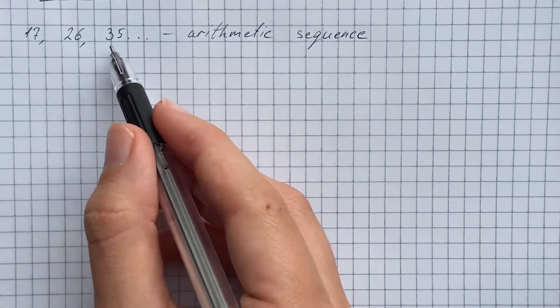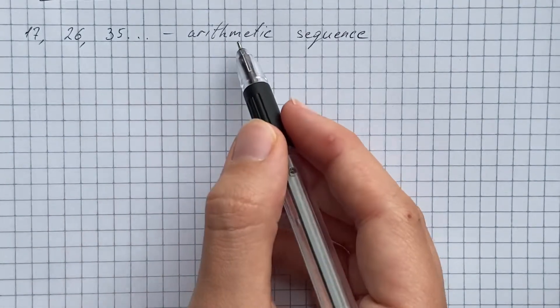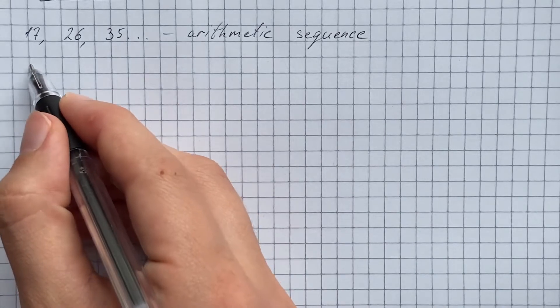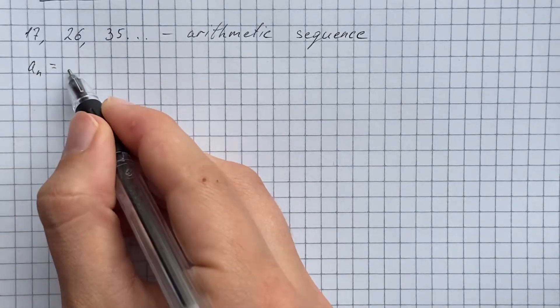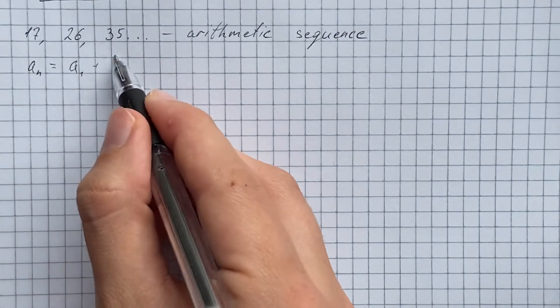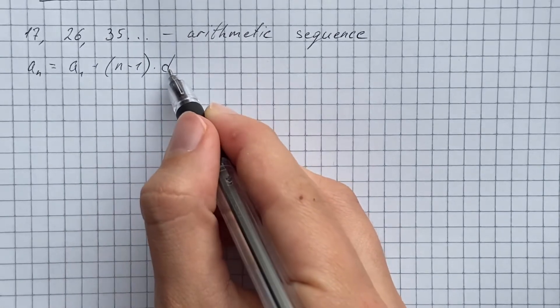We have to find the 97th term of the given arithmetic sequence, and here we're going to use the equation that a sub n equals first term plus n minus 1 times common difference.